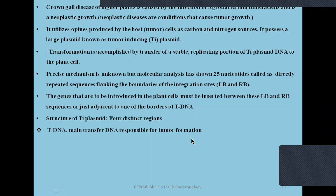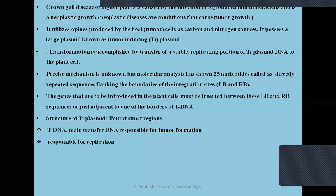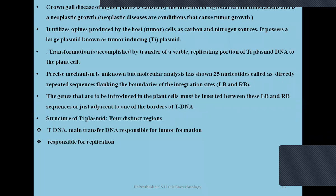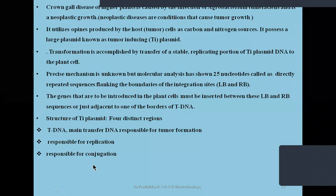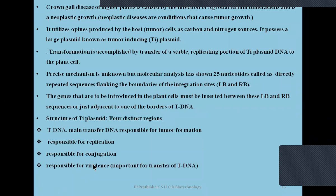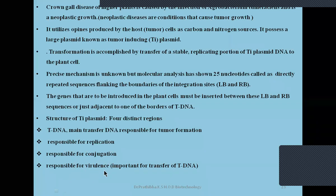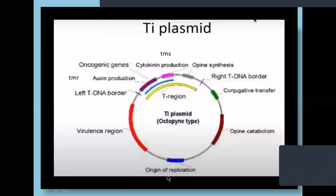The T-DNA is responsible for tumor formation in the plant. It is also responsible for replication — as we know, all plasmids are self-replicative; they replicate by themselves and do not depend on the bacterial chromosomes. They are also responsible for conjugation and for virulence. This virulence — in short, the Vir region — is very important for the transfer of T-DNA.